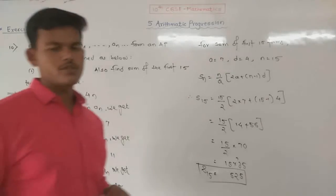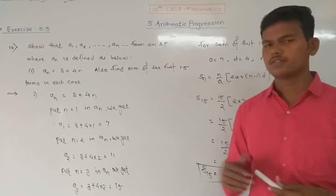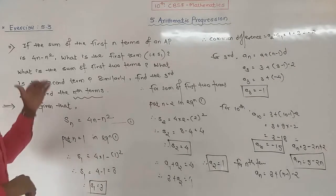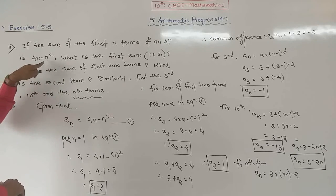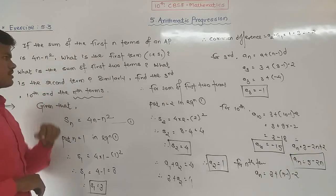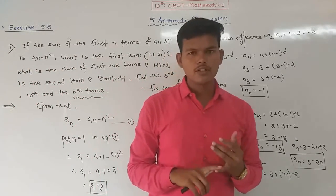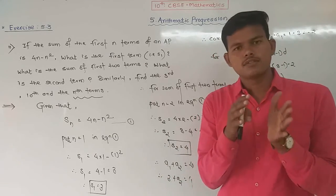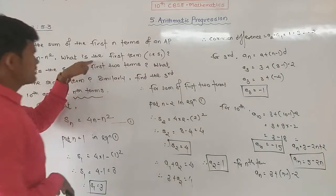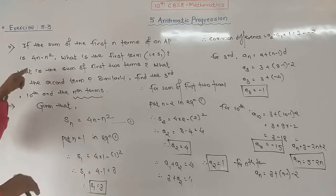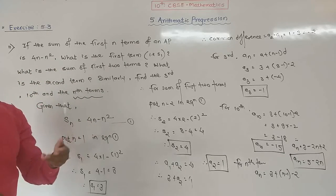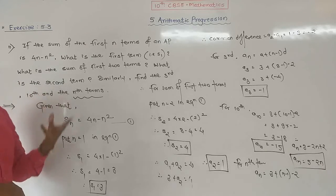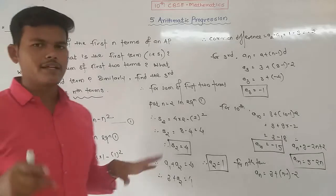Question 11: if the sum of the first N terms of an AP is 4N − N², find the first term, the sum of the first two terms, the second term, the third term, the tenth term, and the Nth term of that AP.